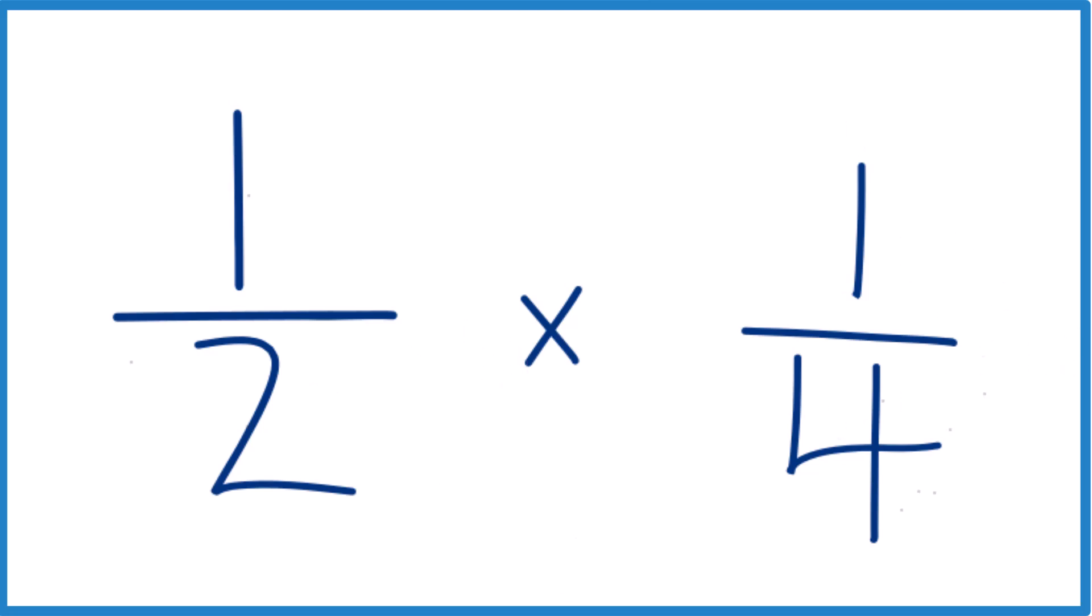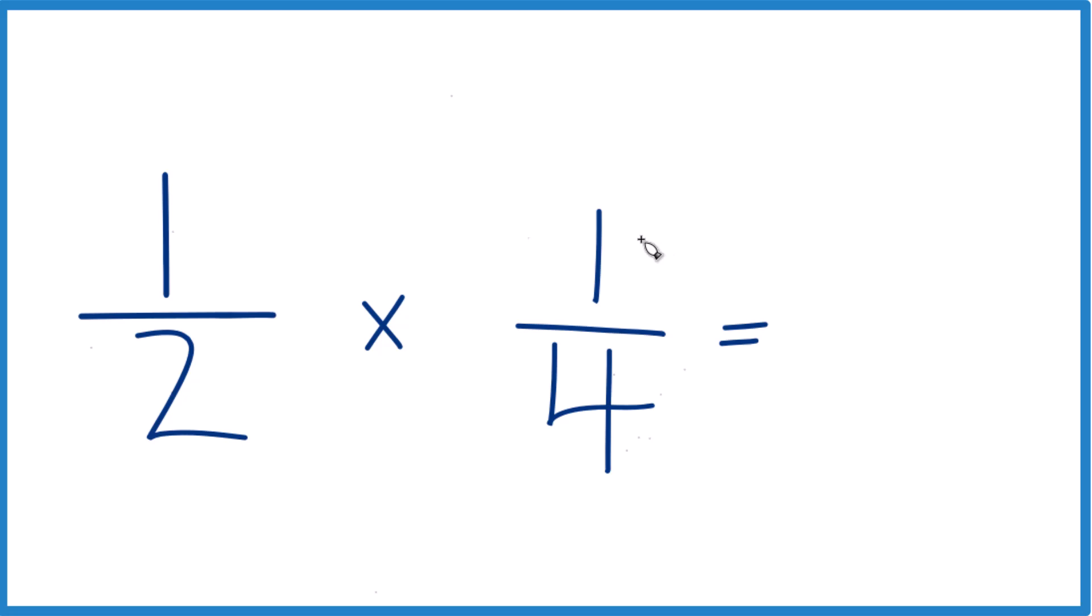So this is just a little easier to deal with because 1 times 1 is 1, 2 times 4 is 8, and that's our answer, 1 eighth.